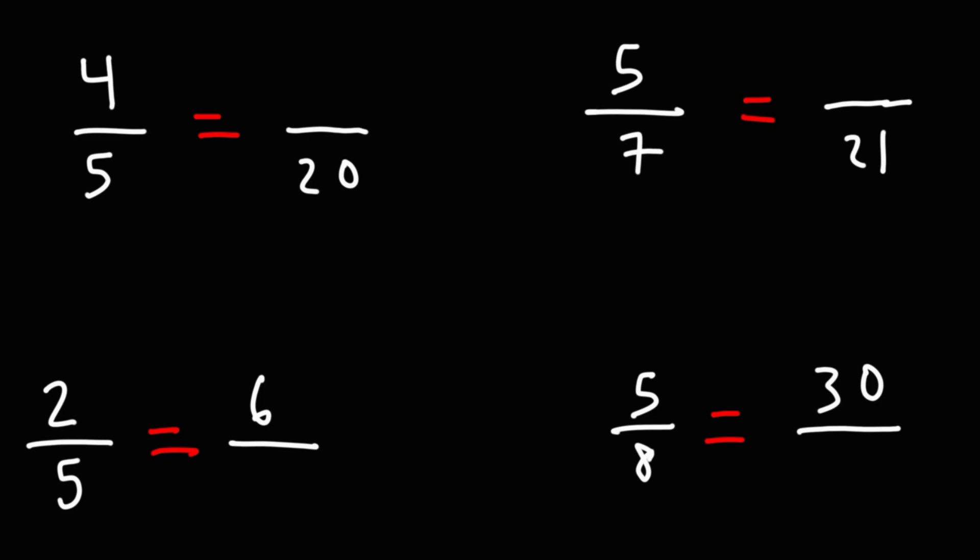In this video we're going to focus on finding equivalent fractions. In these example problems we need to find the missing number, and the way we're going to do that is we're going to make this fraction equivalent to the previous fraction. So how do we go about finding it? Five times what number will give us 20, or in other words, 20 divided by 5 is equal to what? 20 divided by 5 is 4.